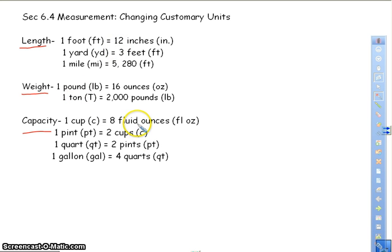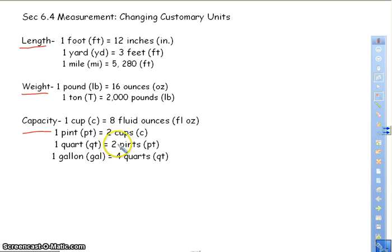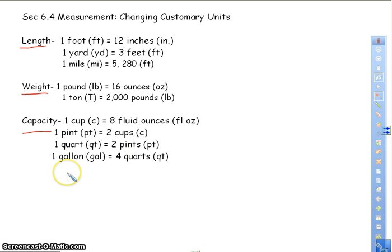Eight fluid ounces equals one cup, so one fluid ounce will be smaller than one cup. One pint equals two cups, so one cup is smaller than one pint. Two pints equals one quart. And four quarts equals one gallon, so one gallon is going to be larger than one quart.